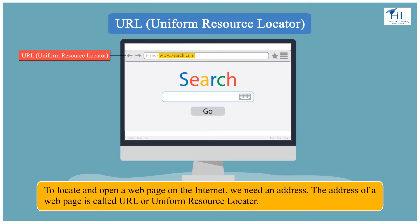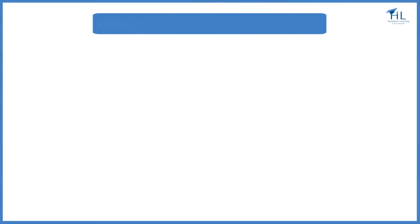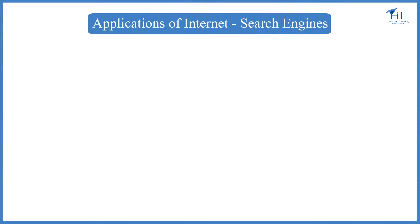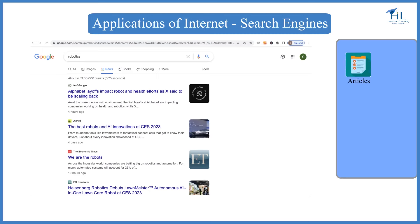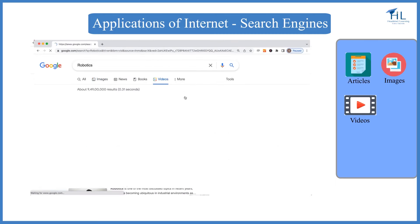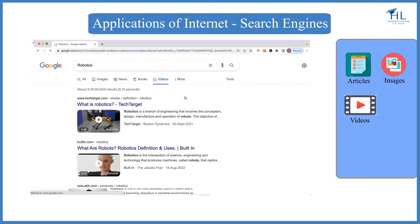We can search for web documents available on the internet by searching for their URLs. One of the most widely used applications of the internet is searching for information. We can search almost anything on the internet — like articles, images, videos, songs, games, and more.